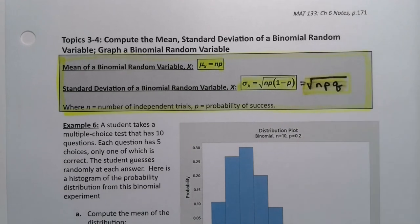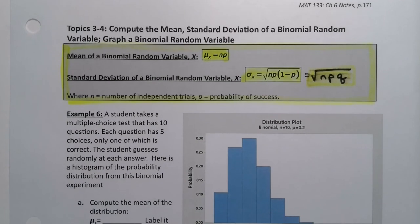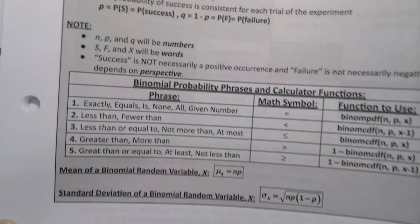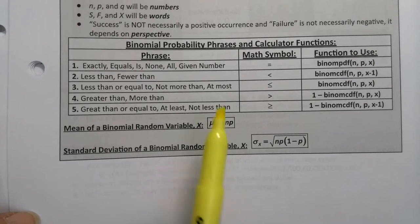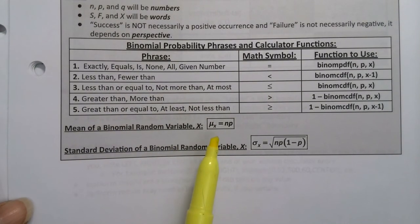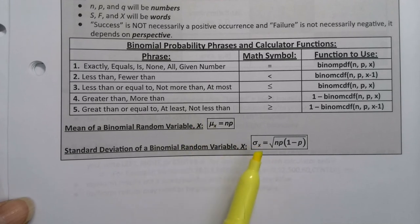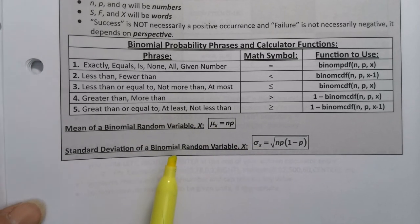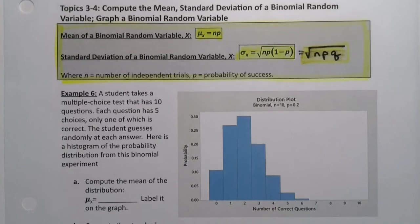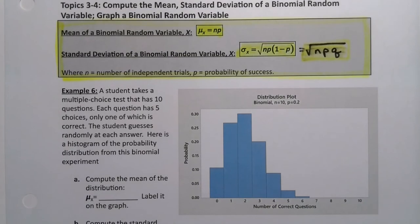The formula for the mean is really simple: it's just n times p. And the formula for standard deviation is not much more difficult: it's the square root of n times p times 1 minus p, or the square root of npq, as some books would have it. These formulas are right here in the table, the big binomial table in your exam notes packet.